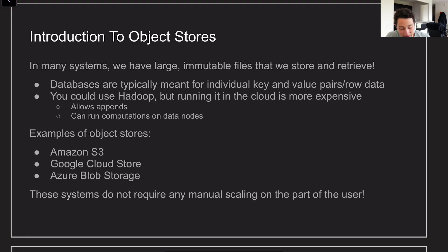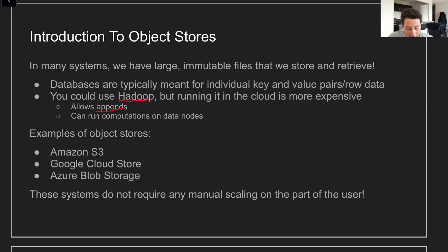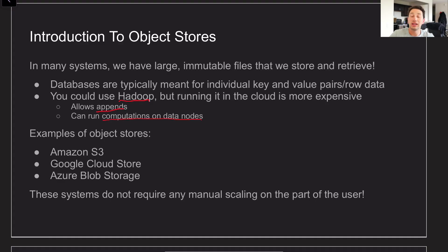In theory you could also use a distributed file system like Hadoop, but even Hadoop has extra functionalities on top of an object store that make it less suited for this task. Hadoop can append data to content within a distributed file system, which means you lose some of the flexibility that object stores use to be so scalable and cheap. Hadoop also has an older architecture that doesn't scale out well in general, and it allows you to run computations on data nodes — something you can't do in an object store. Think of an object store as just a bunch of disks for storing data, without perfect data locality.